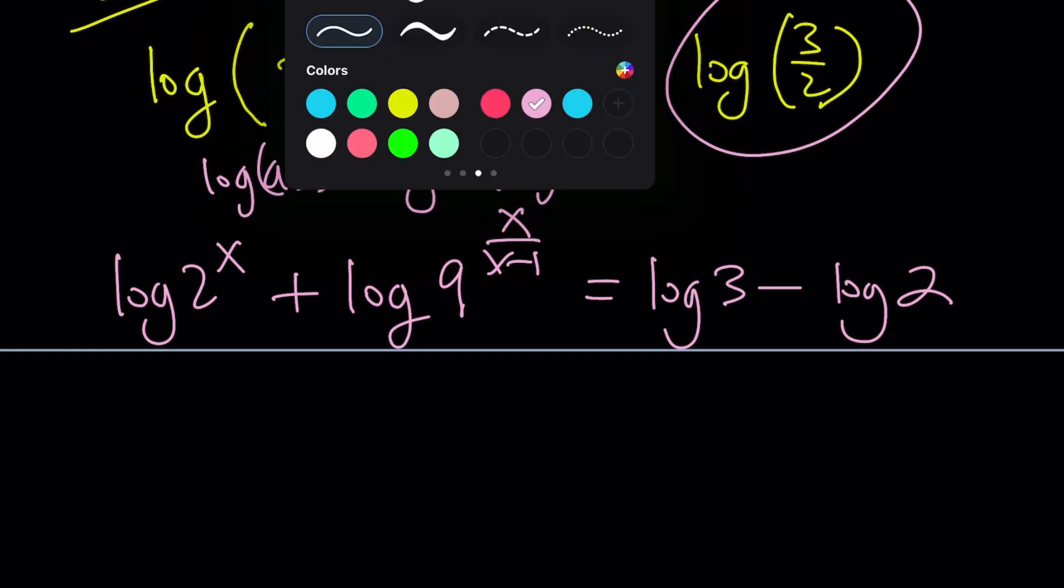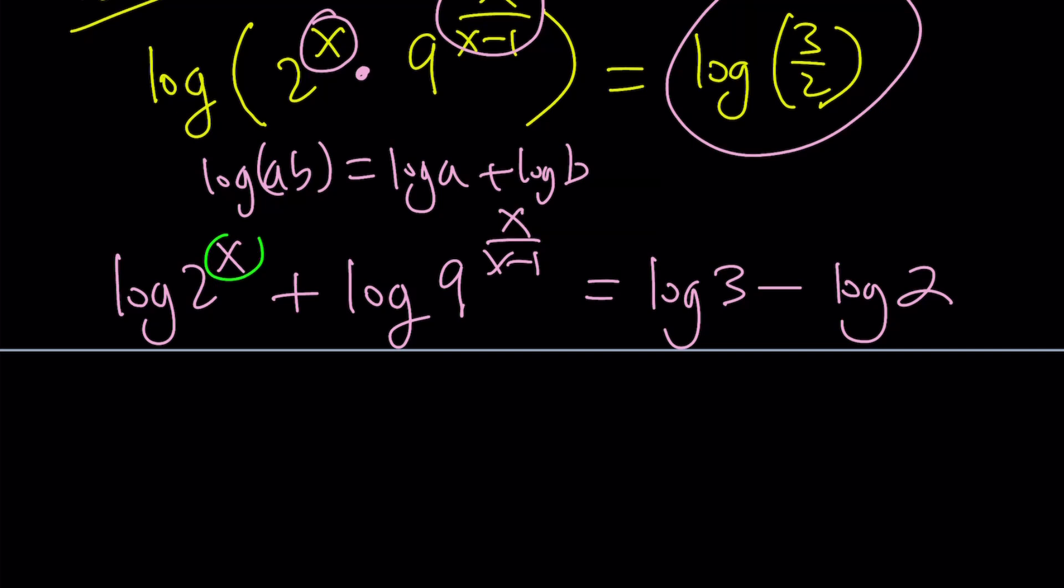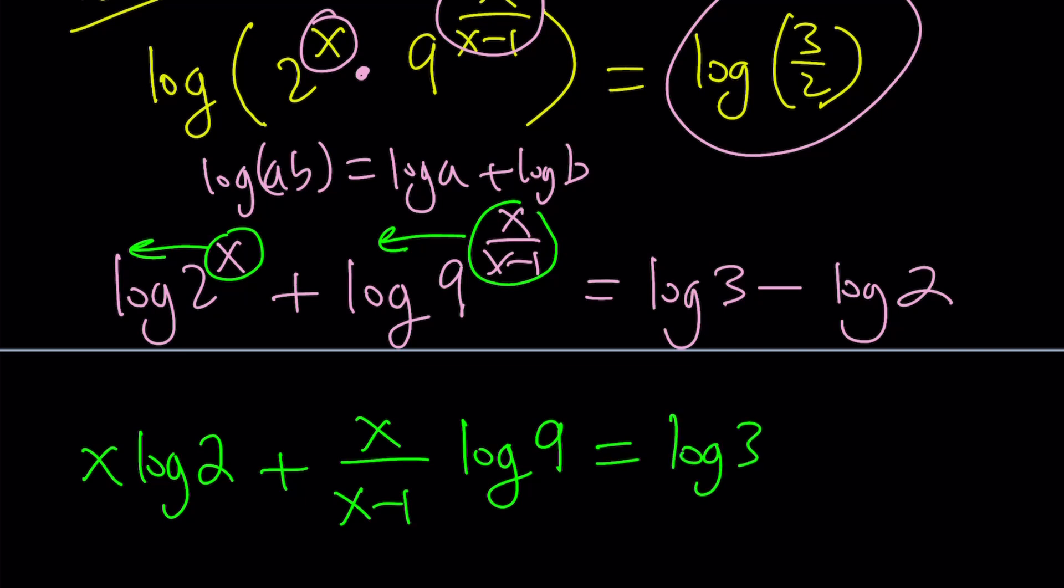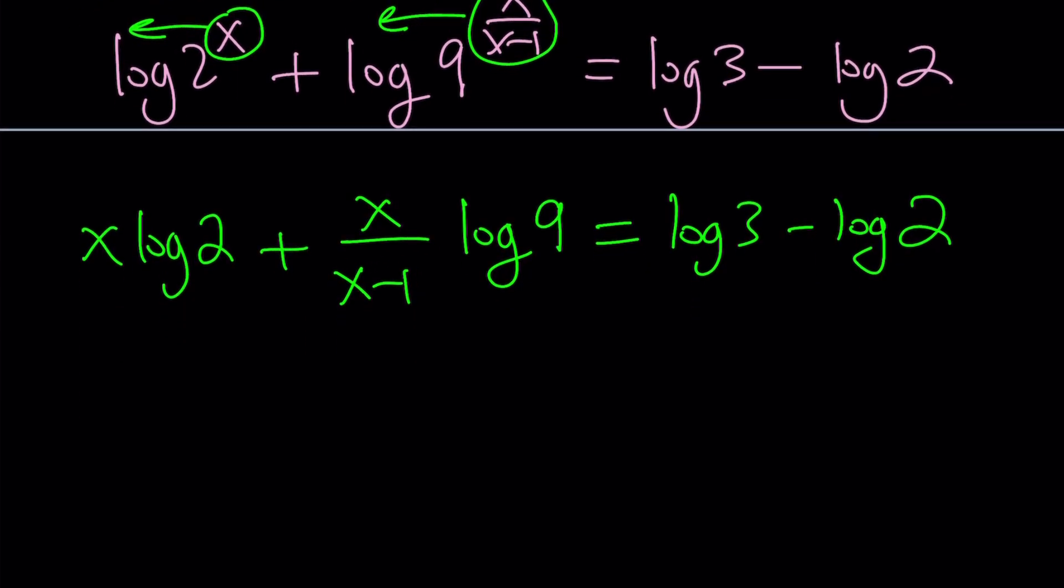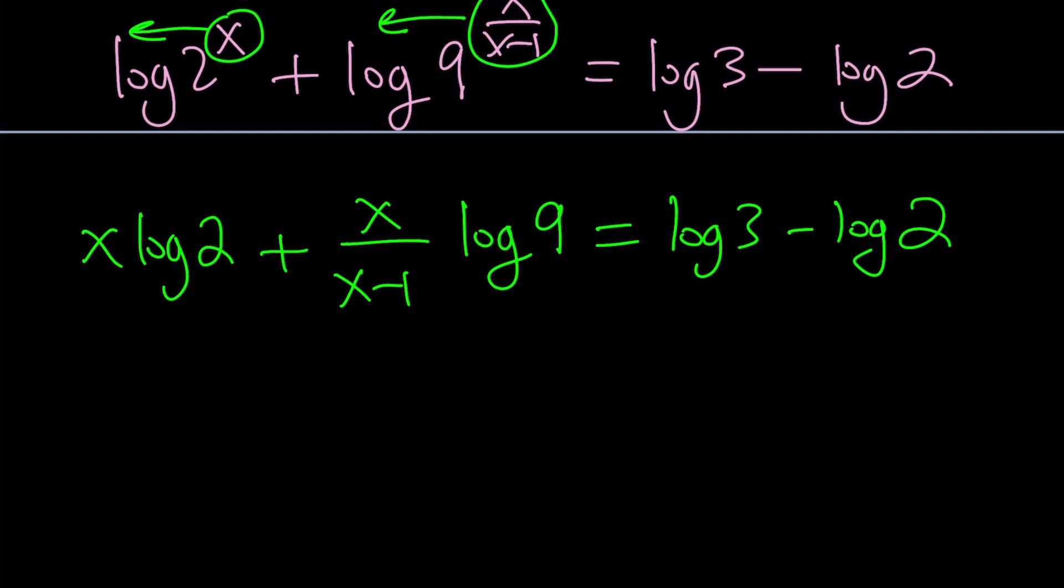Now here's what we're going to do. We're going to bring this down and we're going to bring this down. So now we get x log 2 plus x over x minus 1 times log 9. And right hand side is a constant. Notice that we could also keep it as log 3 halves or even call it k. But we're going to put it on the left hand side pretty soon so let's leave it at that.